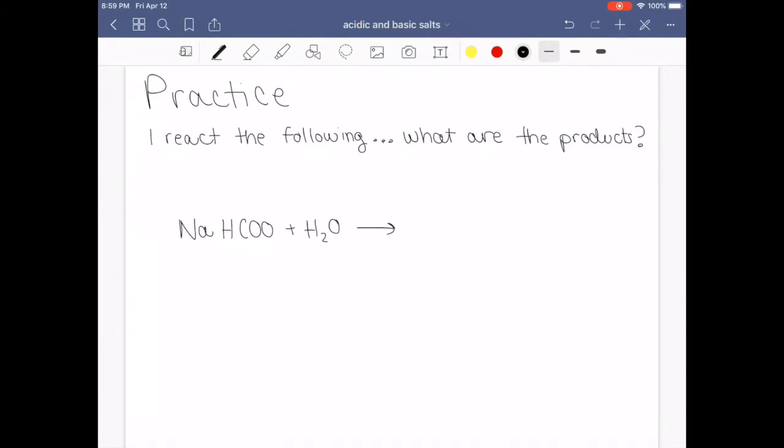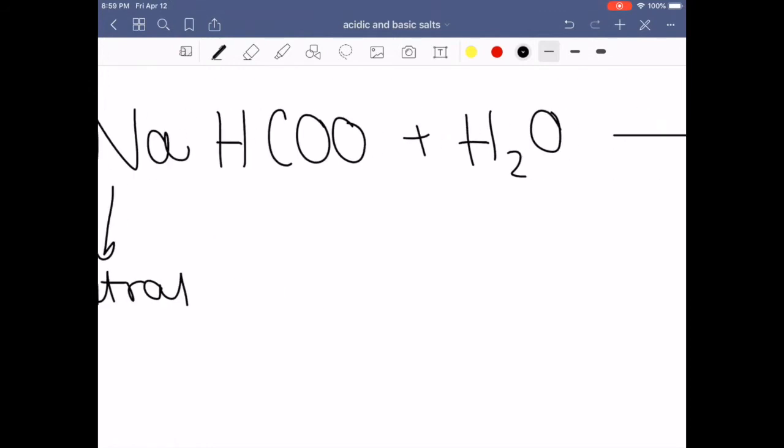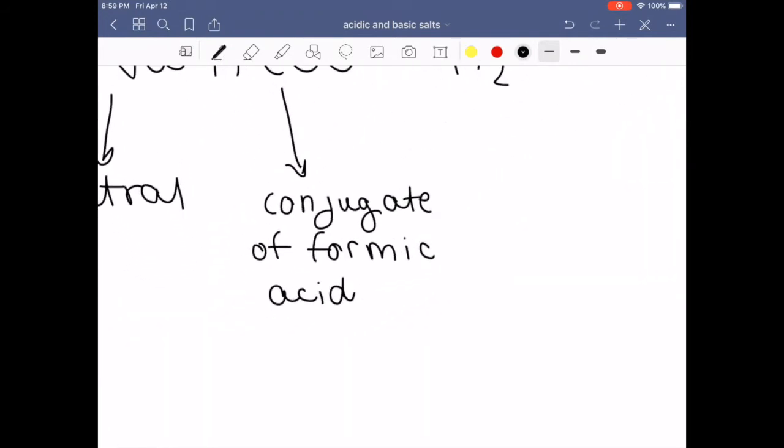So this requires you to look at the salt and see what it is, if it's acidic or basic, and then determine what's going to be formed based on that. So this sodium we know is neutral. However, this anion is something that my students probably won't be familiar with. This is the conjugate of formic acid. So this is the conjugate of formic acid, meaning that it is a base.